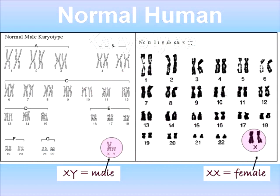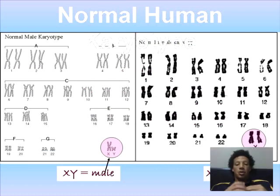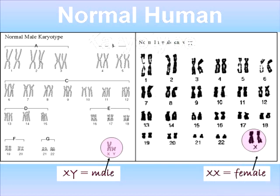Here is a picture of a normal human karyotype. On the left, you have the sex chromosomes X and Y, which is a male, and on the right you have XX, which is female. This is the normal karyotype of a healthy human.